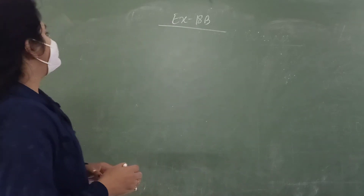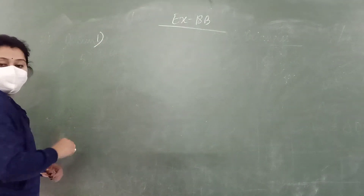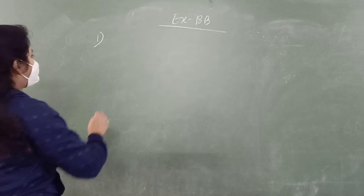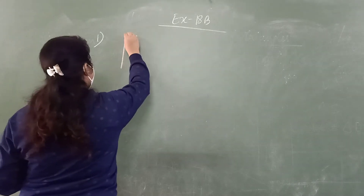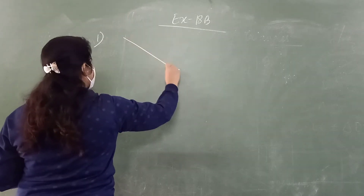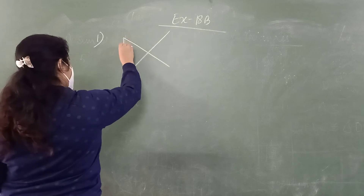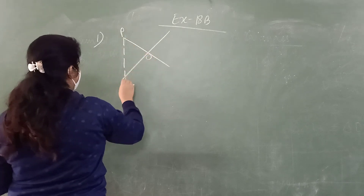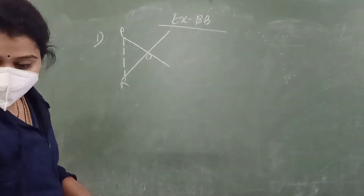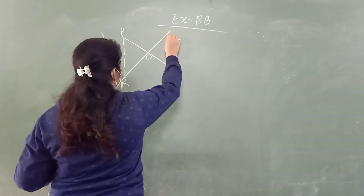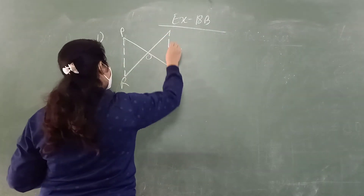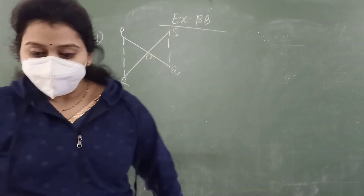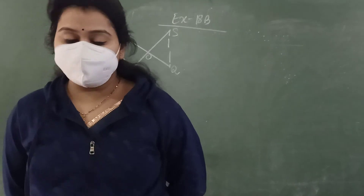So here I am going to begin the exercise. The first question: when the figure is given, you have points P, O, R, S, and Q. PQ and RS bisect each other.